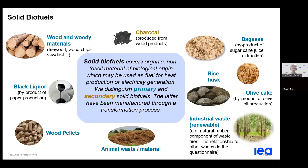On this slide you can see the solid biofuels classification, zooming in on solid biofuels. On the center of the slide you can see the definition — all products here are considered primary products, except charcoal, which is derived from the carbonization of wood. One product that needs explanation is black liquor on the left-hand side, which is a byproduct of the paper manufacturing process. It is actually liquid, but is conventionally considered within solid biofuels because its composition and use is more similar to solid than conventional liquid biofuels.